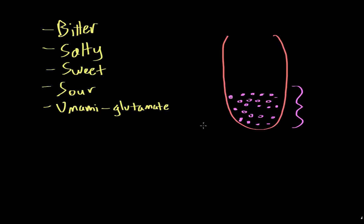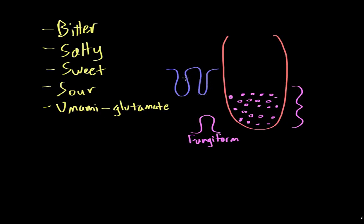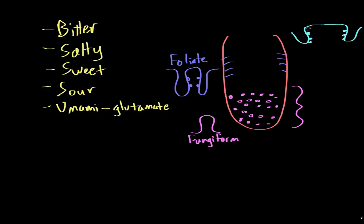There are three different types of taste buds. The first are known as fungiform taste buds, which are mostly found in the anterior part of the tongue. There are also foliate taste buds, which are mostly found on the sides of the tongue. And finally, there are circumvallate taste buds, which are mostly found in the back of the tongue.